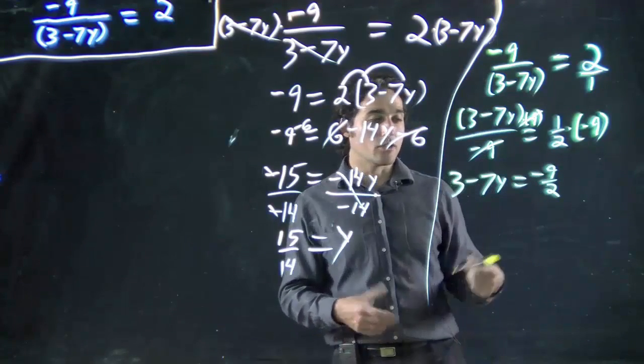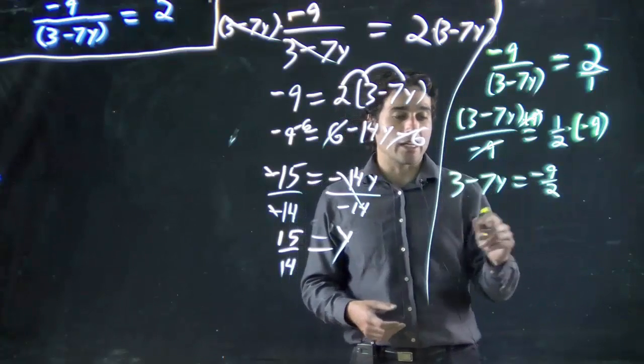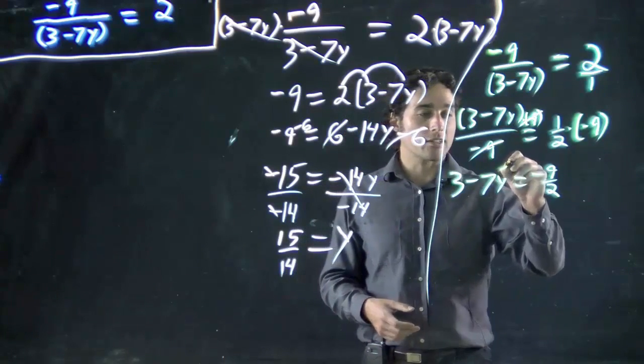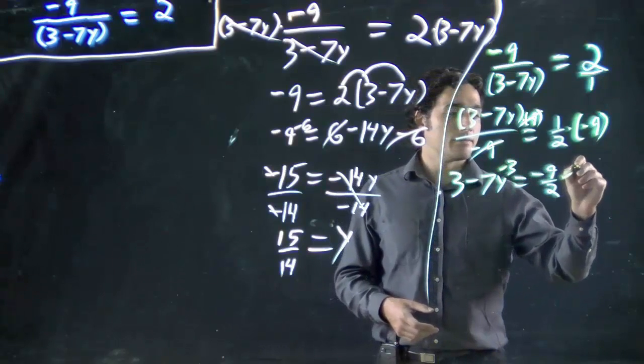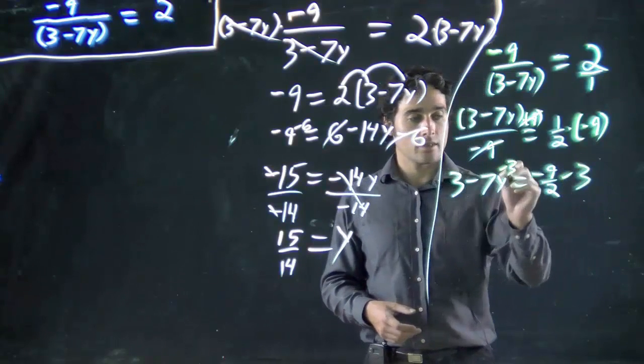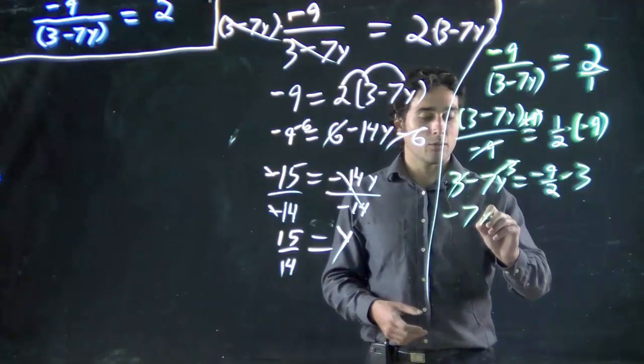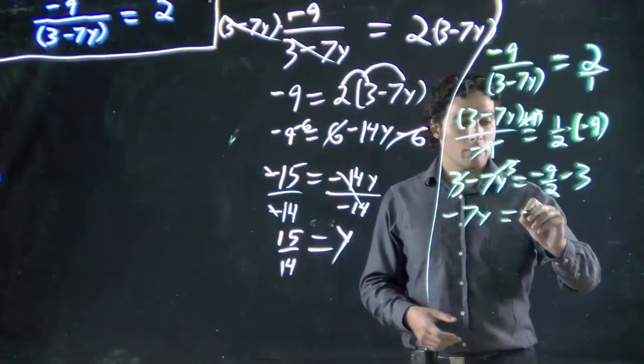Well, I've got to start doing reverse BEDMAS. In this case, I have a subtraction, so I've got to get rid of that. I'm going to subtract 3 from both sides. These two will cancel. I get minus 7y equals minus 9.